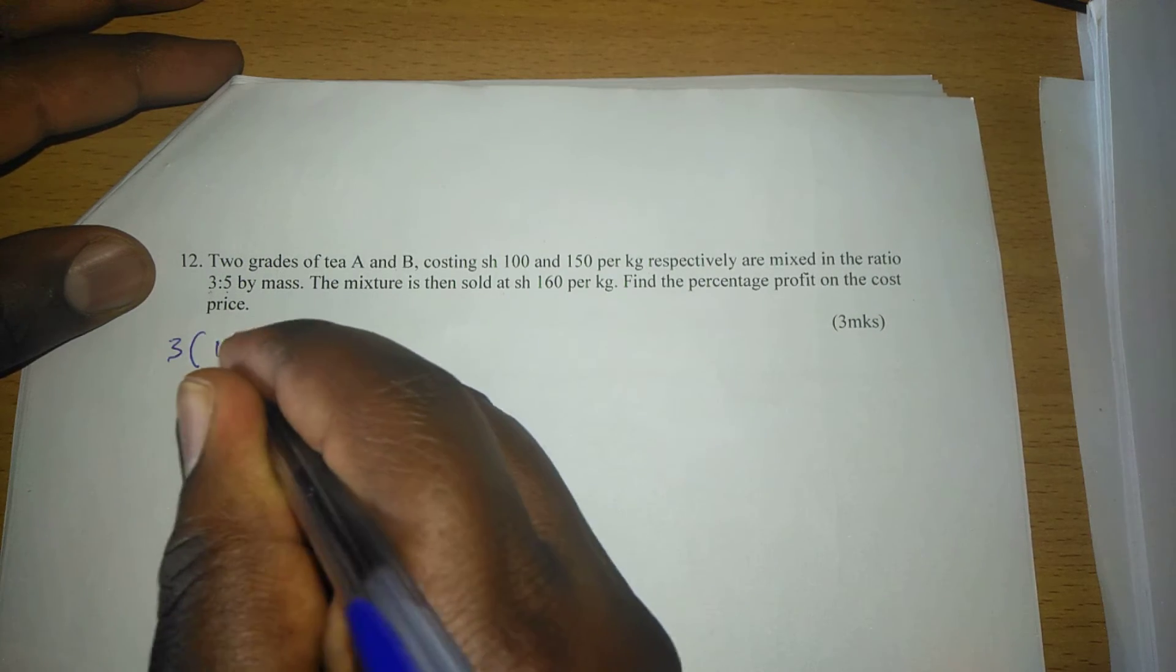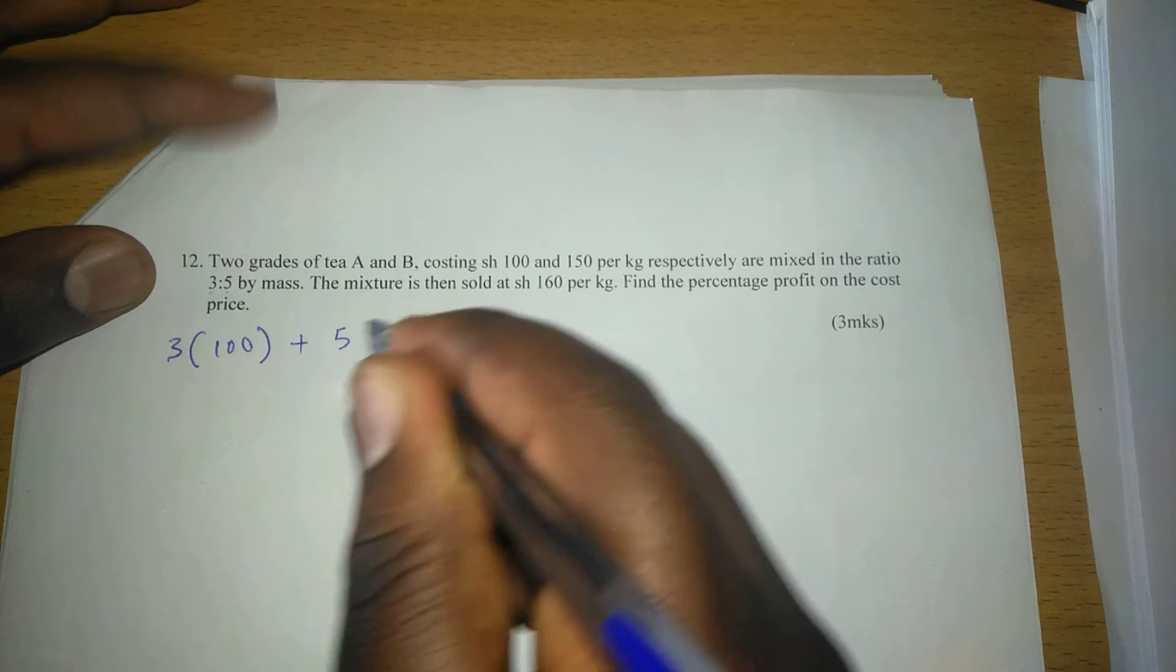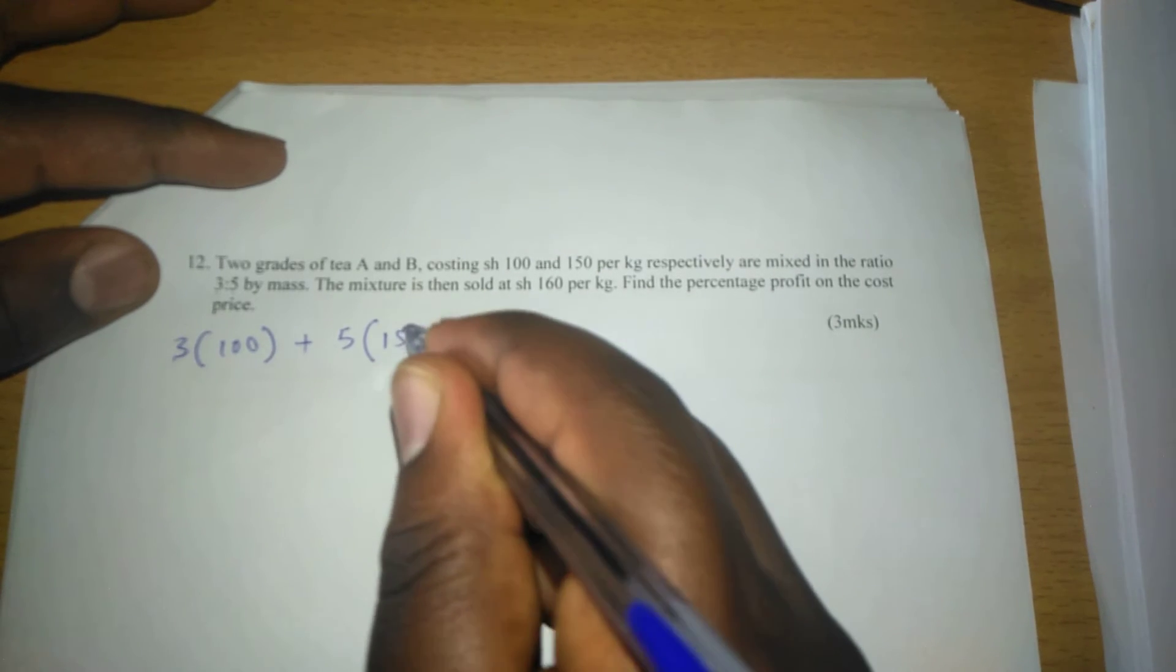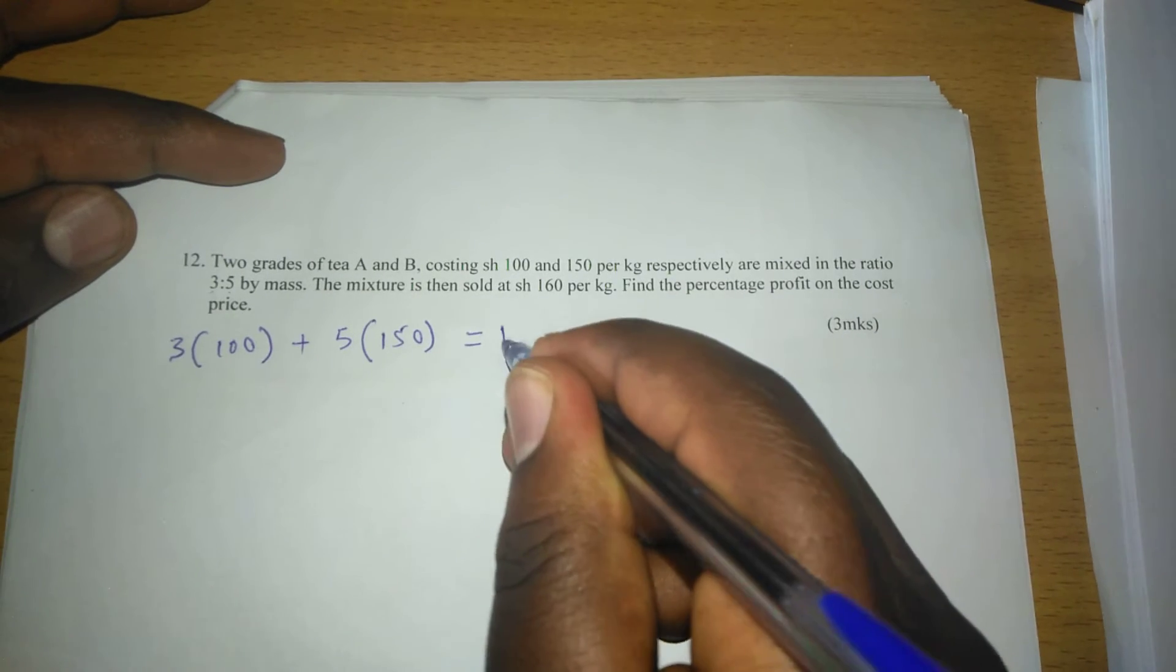And three kilograms of grade A which is costing 100 plus the five kilograms costing 150 of grade B, such that this one gives us 1050.